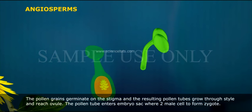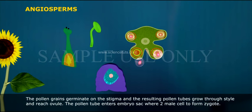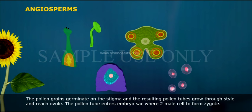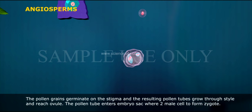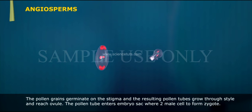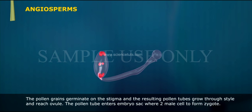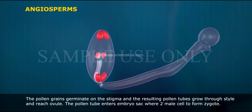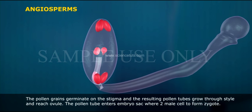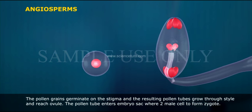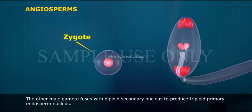The pollen grains germinate on the stigma, and the resulting pollen tubes grow through the style and reach the ovule. The pollen tube enters the embryo sac where two male gametes are released; one fuses with the egg cell to form the zygote, and the other male gamete fuses with the diploid secondary nucleus to produce the triploid primary endosperm nucleus.